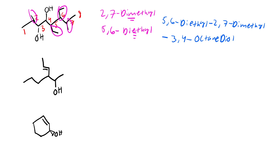Look at what you wrote for the parent and try to draw the structure from what you wrote - ignore the original structure on the exam. If it looks completely different, it's probably wrong. Octane-diol literally says eight, two-alcohol. If you're doubting yourself, that's how you verify.